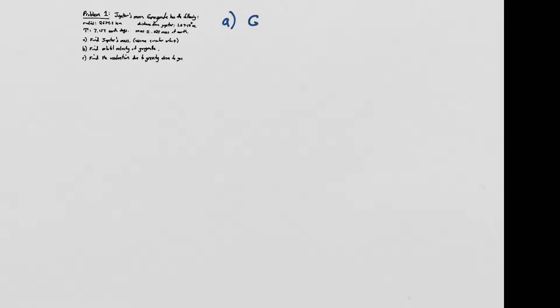The first thing we're going to try to do is find Jupiter's mass. This is fairly straightforward because we remember that we can use Newton's second law and his law of universal gravitation to derive Kepler's third law, which says that G times the mass of the object at the center of the system — in this case Jupiter — times the period squared equals 4π² r³, where r is the distance between the objects from center to center.